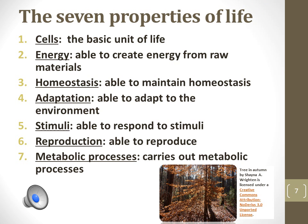There are seven properties of life. In order for an organism or a living system to be considered living, it must contain each of these properties. The first property of life is the cell — all living organisms are made of at least one cell, which is the smallest unit to contain all of the properties of life. Second is energy: all living organisms are able to create energy from raw materials, such as that obtained from food, which is necessary to carry out work needed to maintain life.